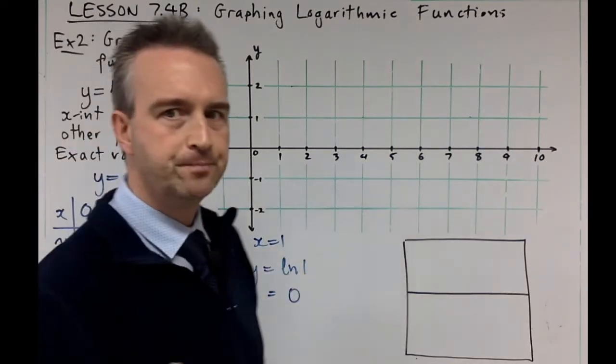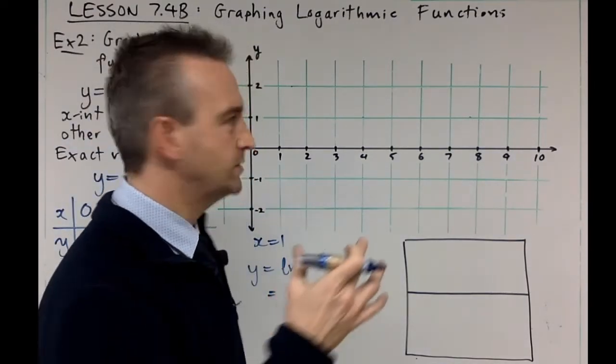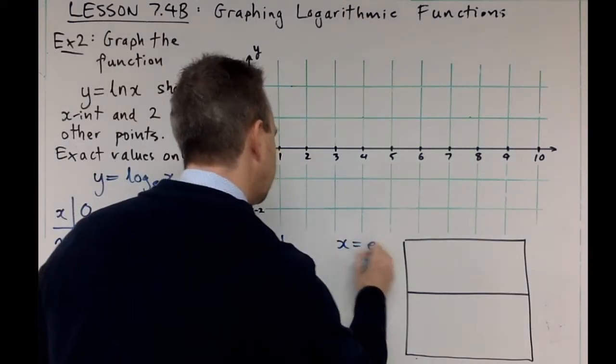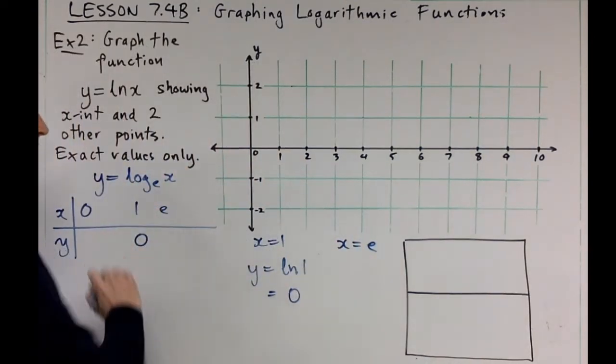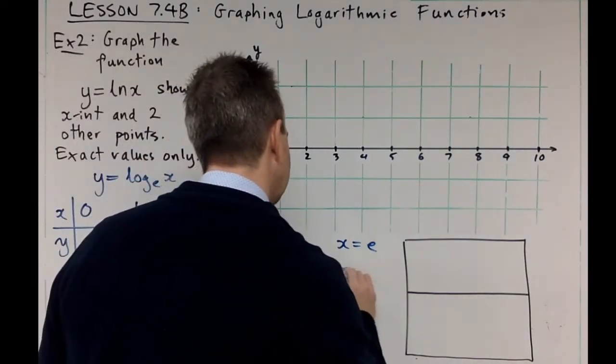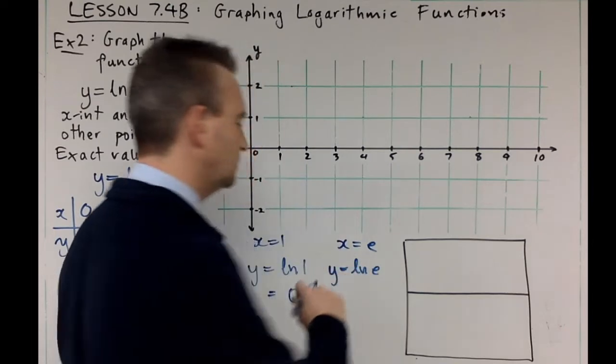But now what else can we do? Can we do log two? Basically you're going to need your calculator for that. We're going to try and avoid decimals here. All we can do here is pick smart x values. We're going to do x is e, and e is about 2.7. Remember, if we put that in we get y equals ln e.